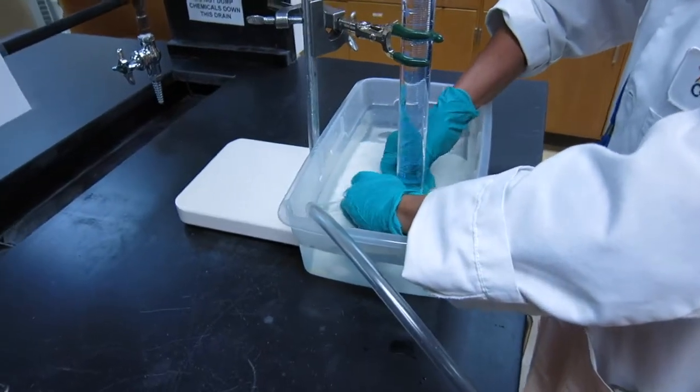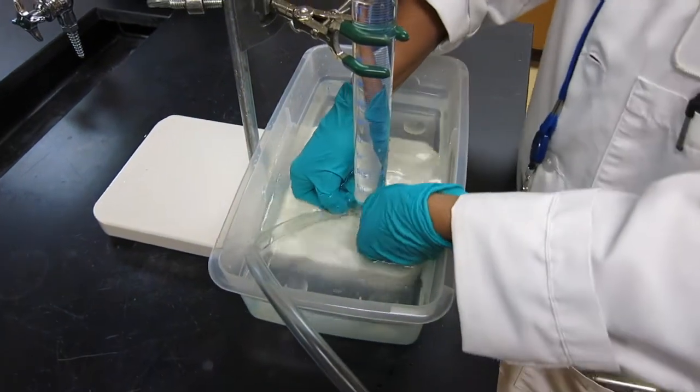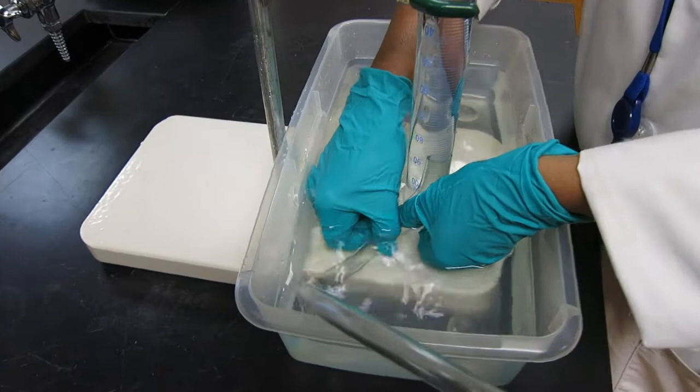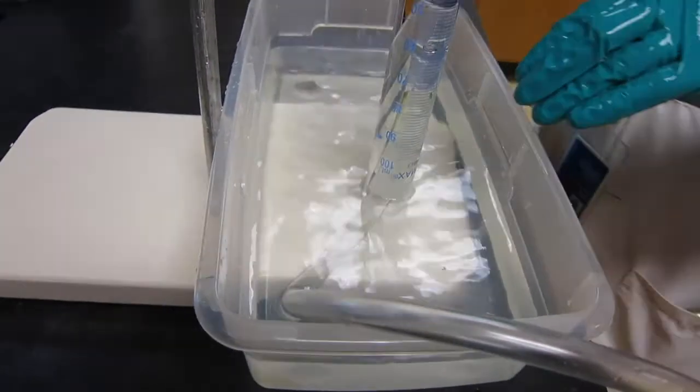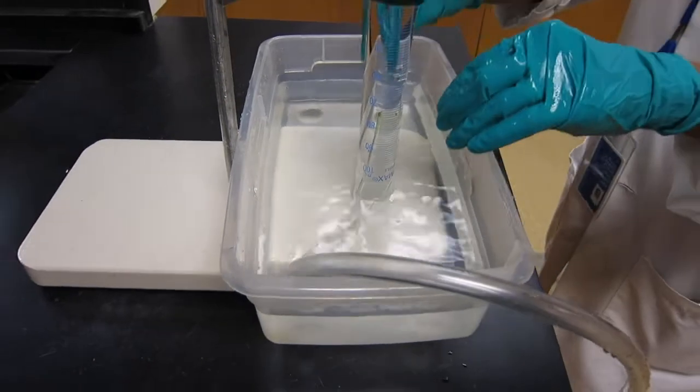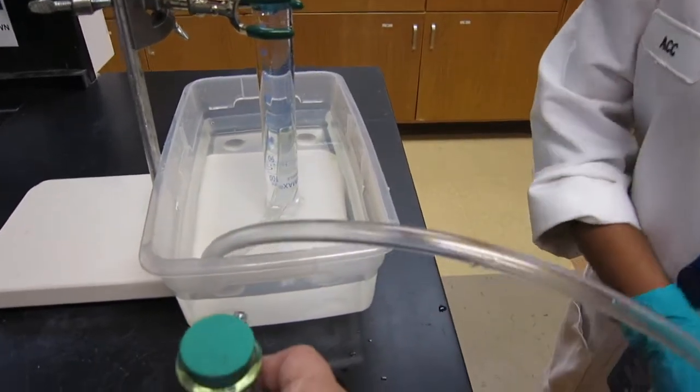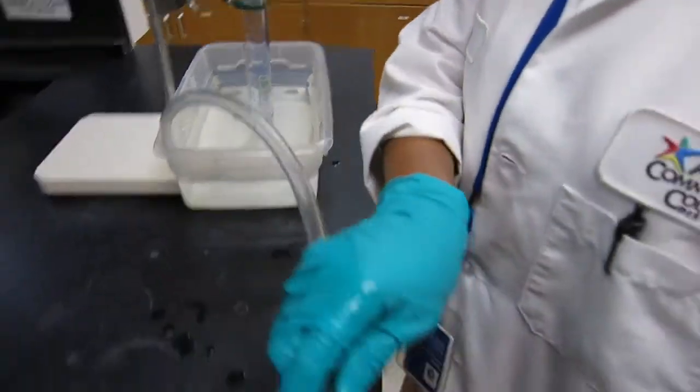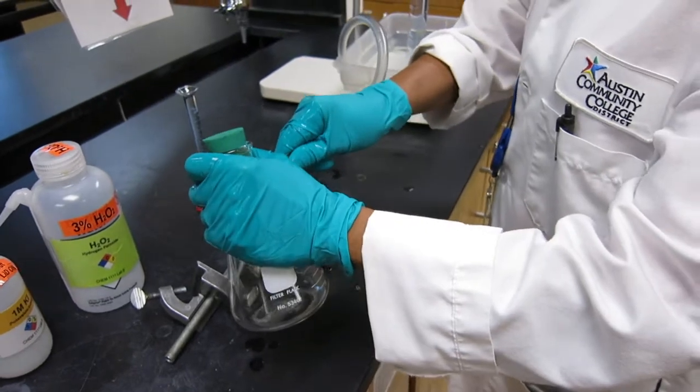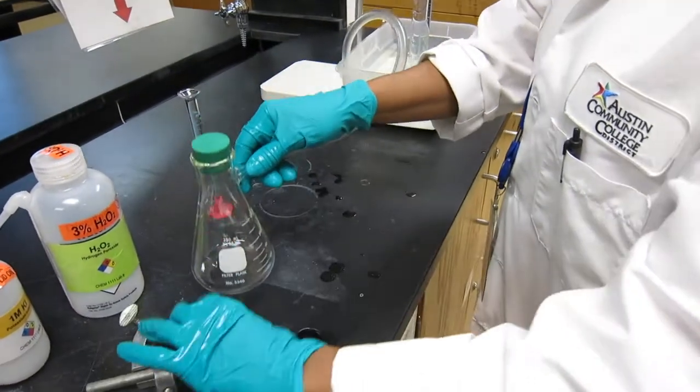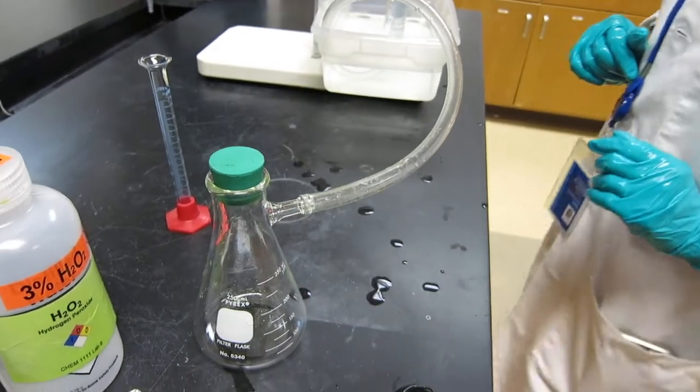Next we are going to place the tubing inside the graduated cylinder. And now we're going to connect it to the side arm flask. And we need to make sure that you put stopper on it.